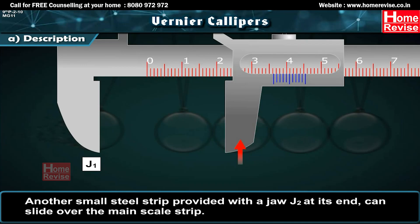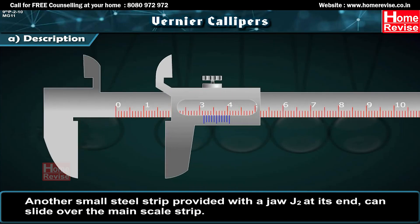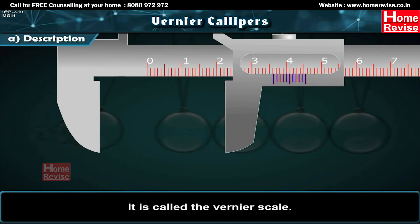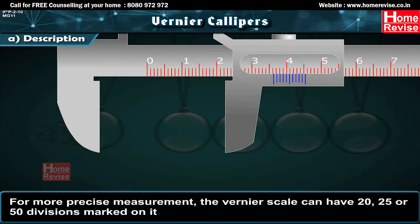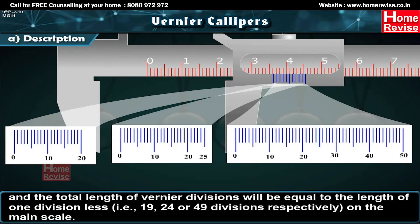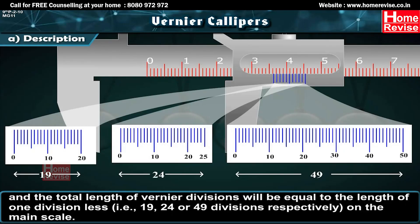Another small steel strip with jaw J2 slides over the main scale strip and has a scale called the Vernier scale, with 10 divisions covering a length of 9 mm. For more precise measurement, the Vernier scale can have 20, 25, or 50 divisions, where the total length of Vernier divisions equals 19, 24, or 49 main scale divisions respectively.